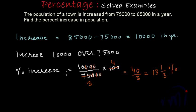So the increase of population in percent will be equal to 13 and one-third percent. So this is the result.